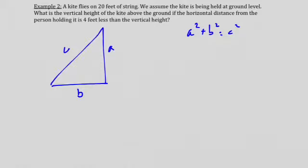Alright, so let me get rid of the square right here because I don't have any square. Now, I should also realize that the distance from the person holding it is 4 feet less than the vertical height. So if I have a equal x, well b equals x minus 4. So now I am able to say that my Pythagorean theorem is going to be x squared plus x minus 4 squared equals c squared.